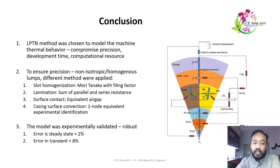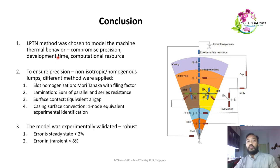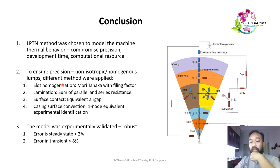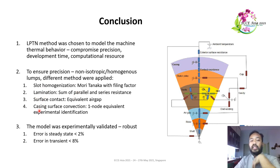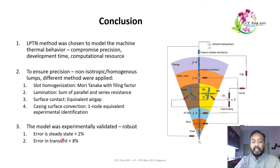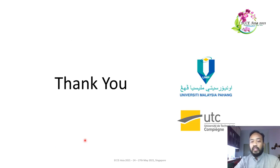In conclusion, we used the LPTN method, chosen for its compromise between precision, development time, and computational resources. To ensure precision, we considered non-isotropic and non-homogeneous lumps, applying different methods for slot homogenization, lamination computation, surface contact, and casing surface convection. The model is experimentally validated with a steady-state error of less than 2% and a transient-state error of less than 8%. Thank you very much for listening — please contact us if you have any queries or questions.